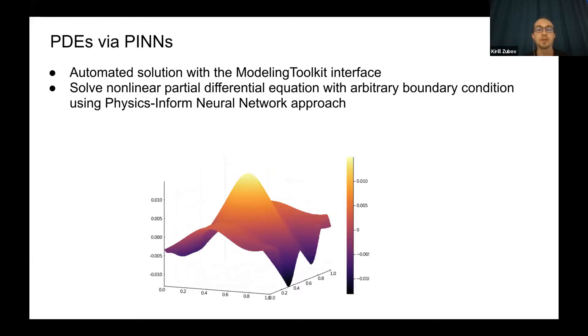It's two main parts. First of all, it's symbolic representation, an automatic solution that's allowed to present the solution in some universal symbolic representation using in SciML. And the second part is the algorithms, physics-informed neural networks that allow calculating nonlinear partial differential equations with some arbitrary boundary conditions.